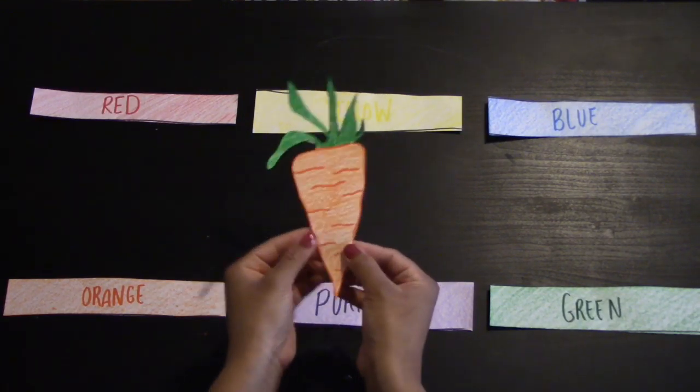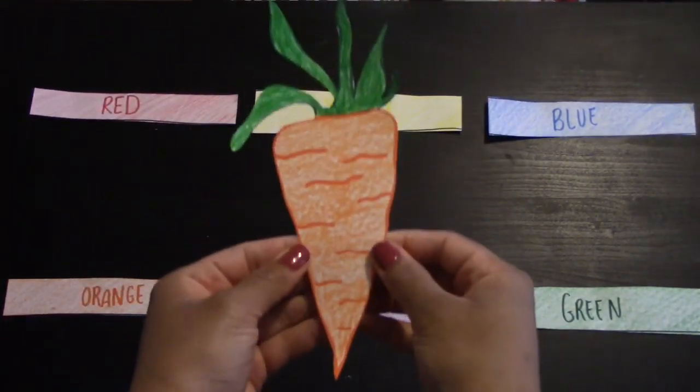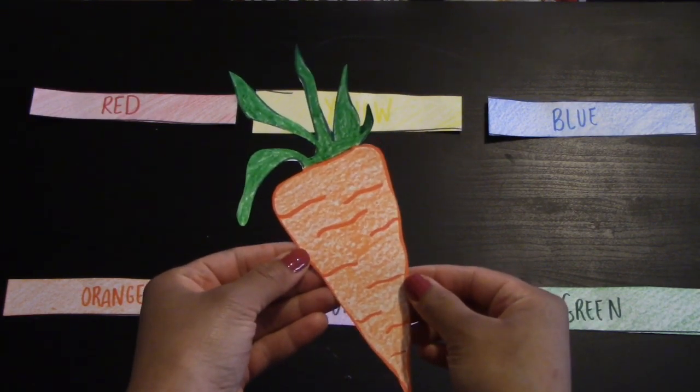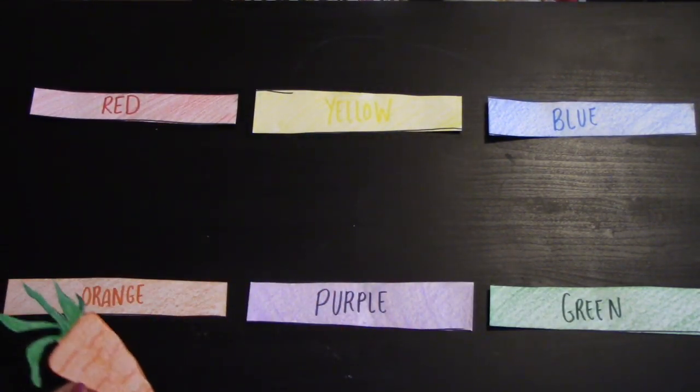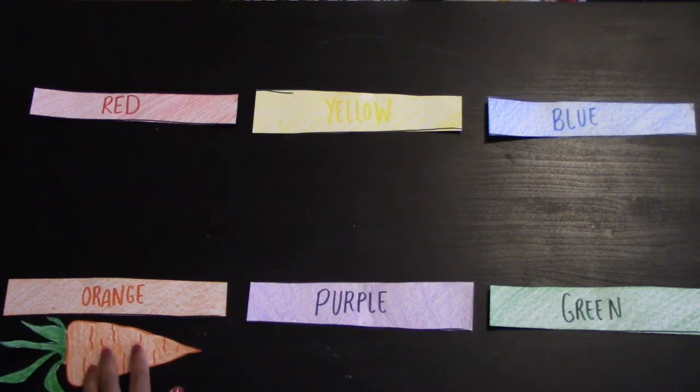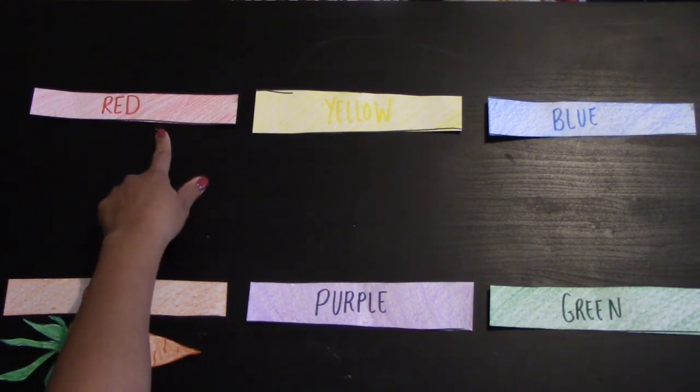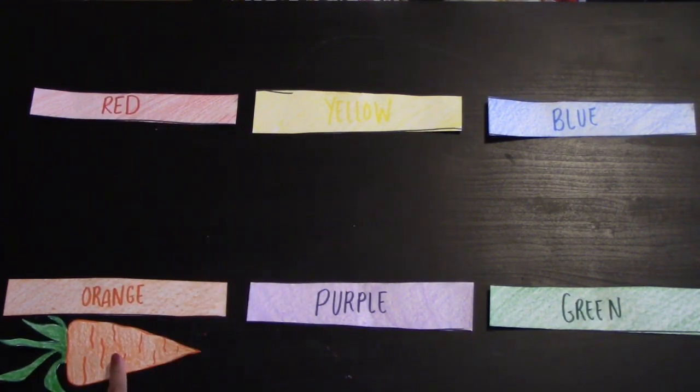Let's match the color of the carrot with the color on the table. What color is the carrot? Orange. Red and yellow make orange.